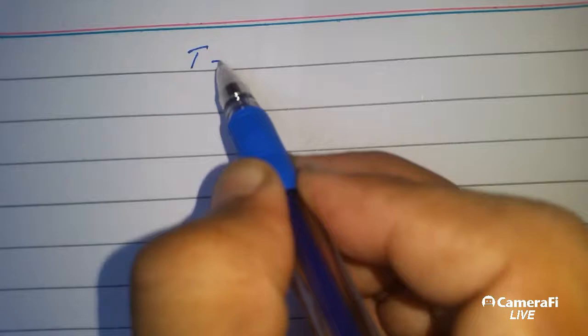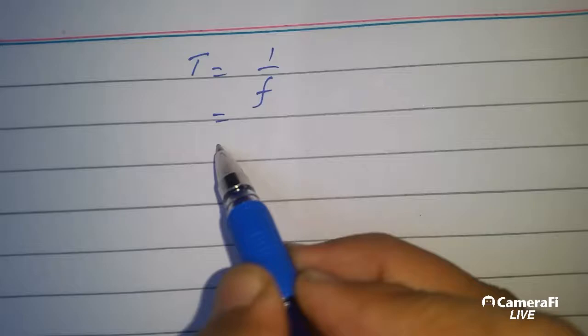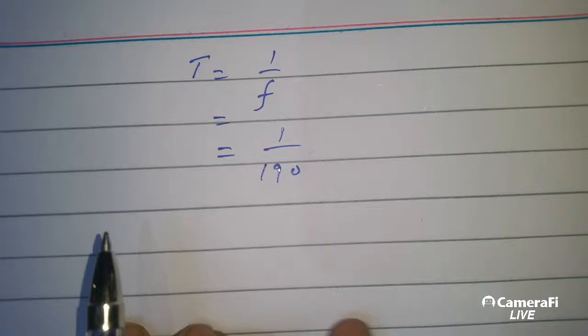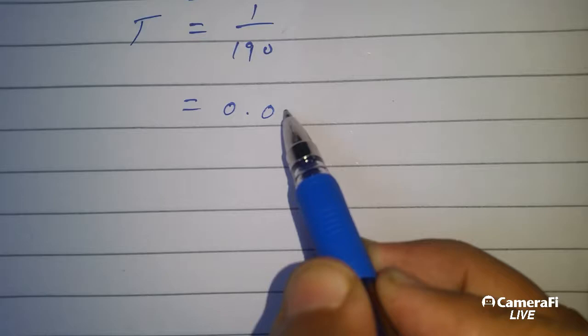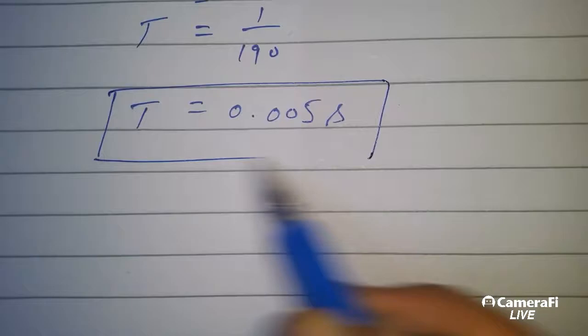T is equal to 1 over f, which is equal to 1 over 190, which is equal to 0.005 second.